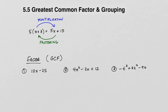Consider the expression 5 times the quantity x plus 3. We know that we can distribute the 5: 5 times x gives us 5x, and 5 times 3 gives us 15. So 5 times the quantity x plus 3 equals 5x plus 15. Factoring is the reverse of this procedure — going from 5x plus 15 back to 5 times x plus 3. The process involves something called the greatest common factor.